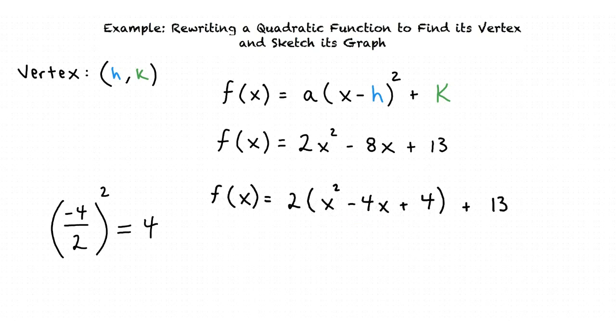It is also important to note that the expression inside the parenthesis is being multiplied by 2. So when we complete the square, we are adding 2 times 4, which equals 8, to the right side of the equation. To balance this, we must also add a -8 to the right side of the equation. 13 - 8 = 5.